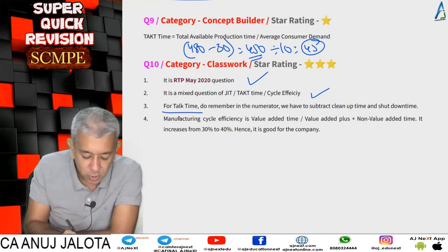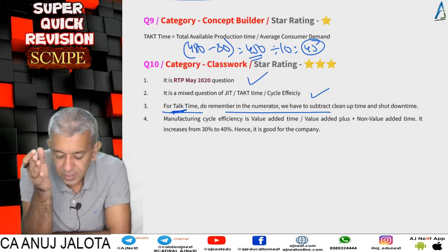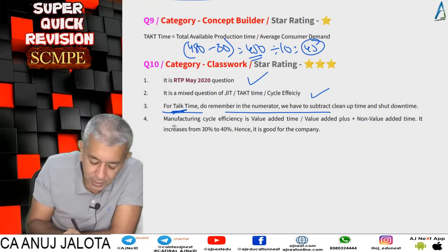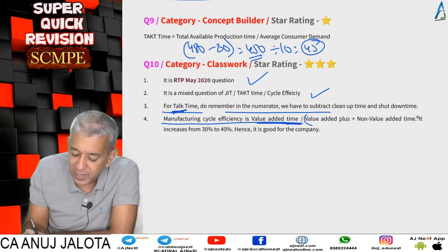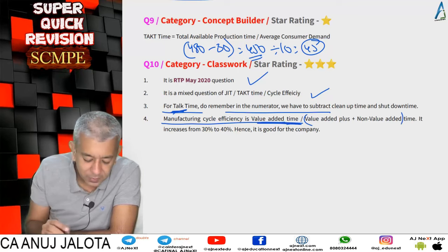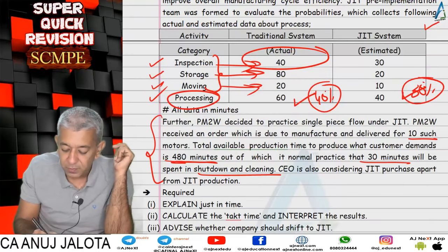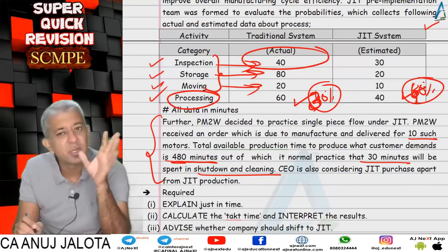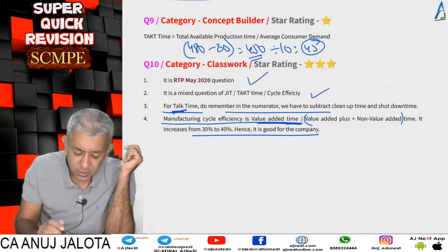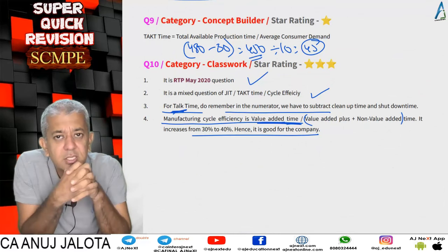It is takt time, not top time. In the numerator, subtract the cleanup time and shutdown time. Manufacturing cycle efficiency = value-added time / (value-added time + non-value-added time). It increases from 30 to 40 percent, which is good for the company. That's it about the JIT lecture — see you next time with a new concept.